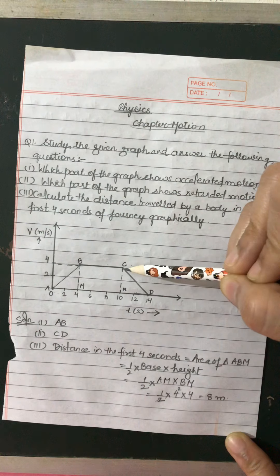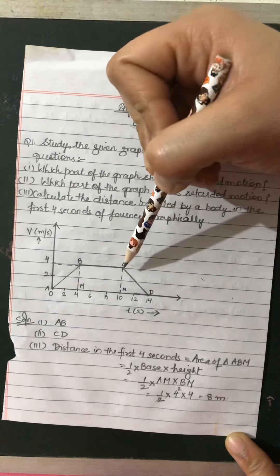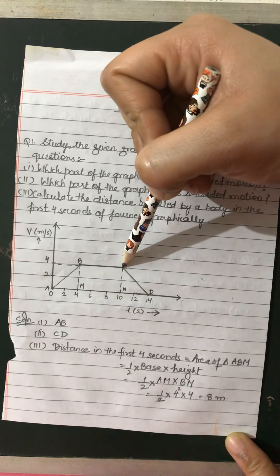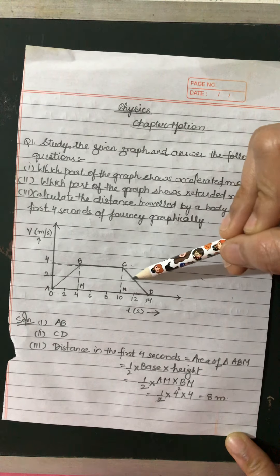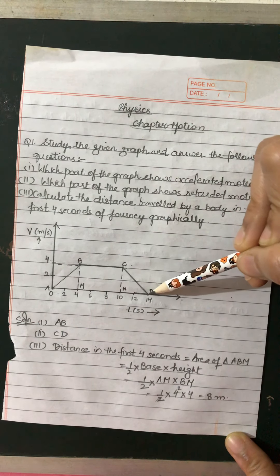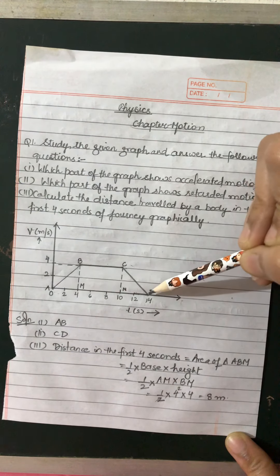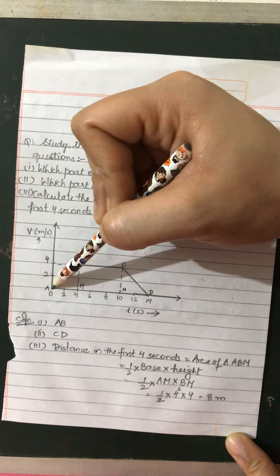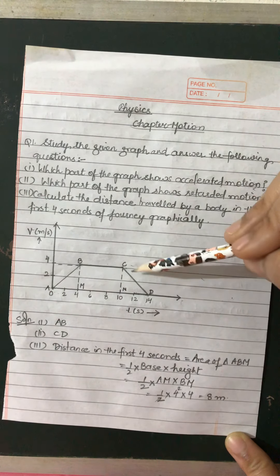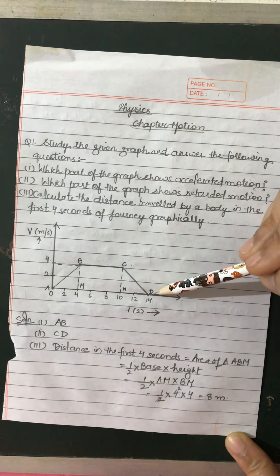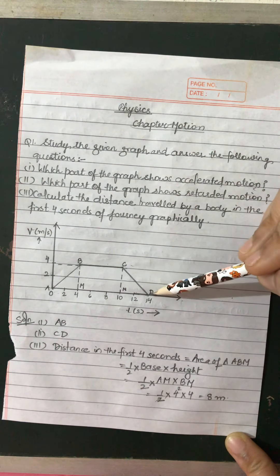Now, from C to D: at point C the velocity is 4. As we go down, velocity is decreasing. Finally, at point D when time is 14 seconds, velocity corresponds to 0. So in this part, velocity is decreasing. This part of the graph is showing retardation.